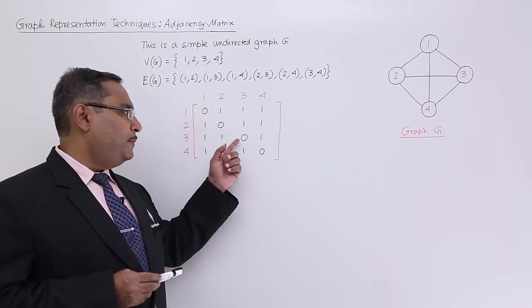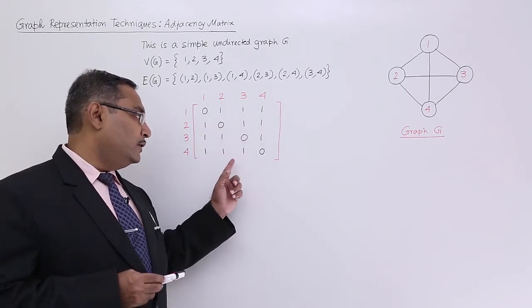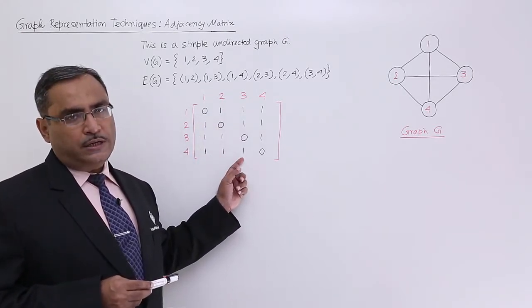So at the diagonal places I have put 0s, and for all other places I have put 1.